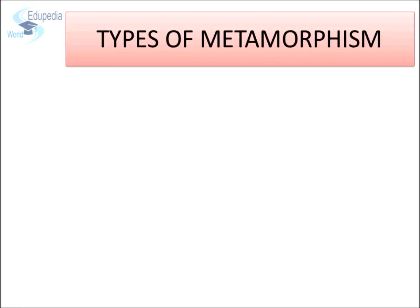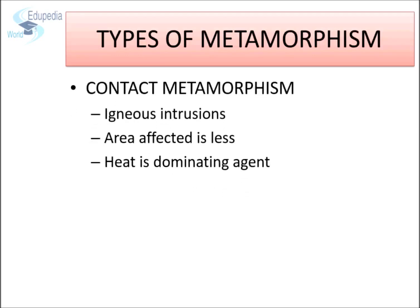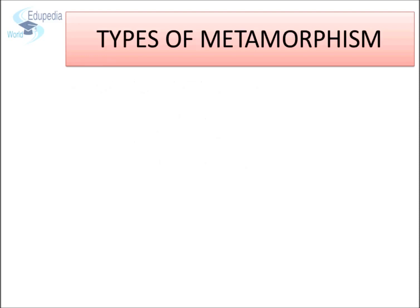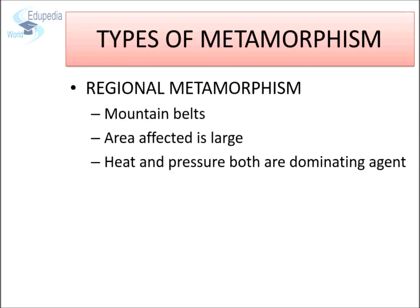Types of metamorphism. Contact metamorphism occurs due to alteration of surrounding rocks by magma; hence it is common near igneous intrusions. The area of rock which is affected is very small — not beyond a few hundred meters from the magma — and heat is the dominant agent of metamorphism in contact metamorphism. Regional metamorphism, on the other hand, occurs due to movement of lithospheric plates; hence it is common in mountain belts. The area of rocks affected is very large, often thousands of square kilometers. Here, both heat and pressure play a predominant role.